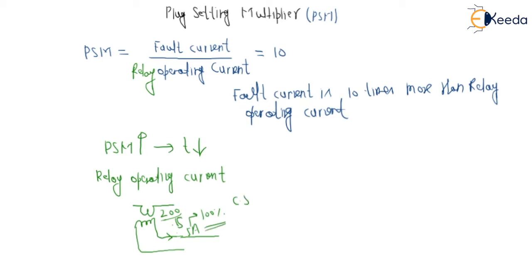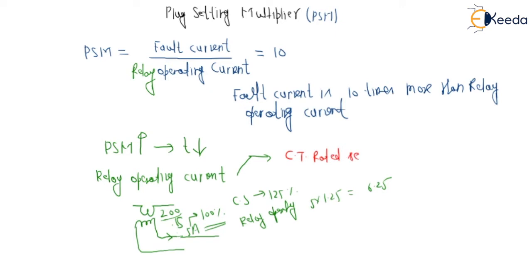If the current setting is 125%, then the relay operating current would be equal to 5 into 1.25, that is 6.25. So the relay operating current is equal to CT rated secondary multiplied by the current setting, because when the current setting changes, the operating current also changes.